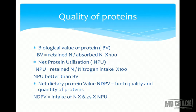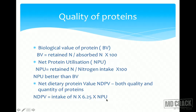Different indices for protein quality: Biological Value (BV) = (retained nitrogen ÷ absorbed nitrogen) × 100. Net Protein Utilization (NPU) = (retained nitrogen ÷ nitrogen intake) × 100 — note nitrogen intake, not absorbed nitrogen. NPU is considered better than BV because it accounts for the digestibility component of the protein, telling us how much protein is actually being utilized.